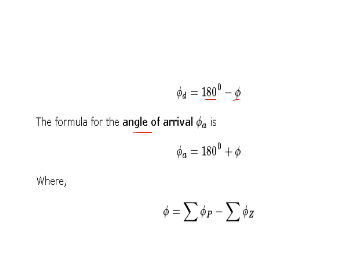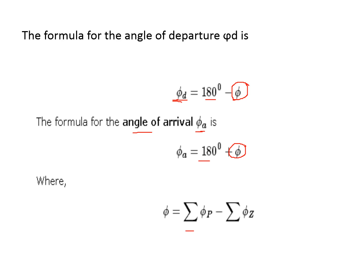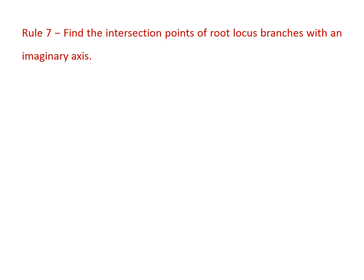The formula for angle of arrival is: φ_a = 180 + φ. Here φ_a is the angle of arrival and φ_d is the angle of departure. To find φ, use: φ = summation of angles due to all remaining poles minus summation of angles due to all remaining zeros. After finding φ, substitute into the departure and arrival formulas to get their respective values.